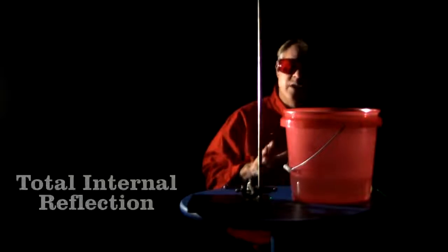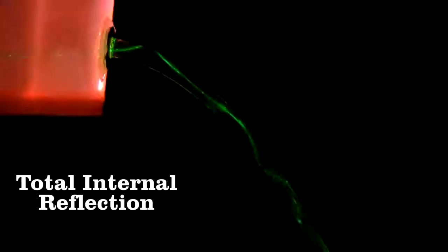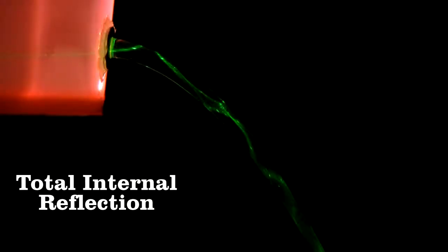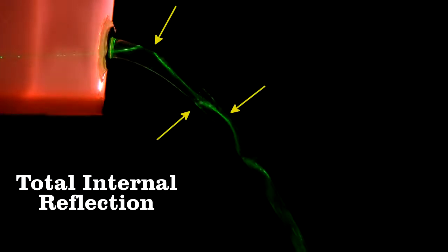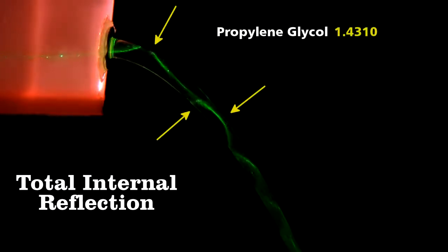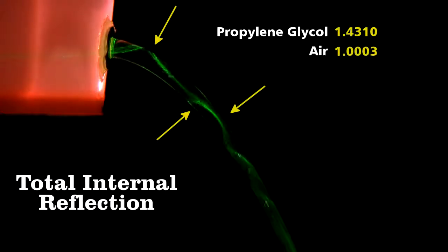Amazing. It does this because of total internal reflection. As the light enters the stream, it is reflected as soon as it hits the interface between air and liquid. You can see here the first reflection, and then the second, and the third. This occurs because there's a difference between the index of refraction of the guide material, here propylene glycol, and the outside air in this case.